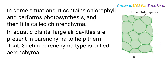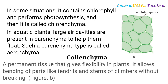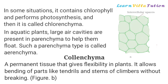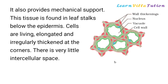In aquatic plants, large air cavities are present in parenchyma to help them float. Such a parenchyma type is called aerenchyma. Colenchyma is a permanent tissue that gives flexibility in plants. It allows bending of parts like tendrils and stems of climbers without breaking. It also provides mechanical support. This tissue is found in leaf stalks below the epidermis. Cells are living, elongated, and irregularly thickened at the corners, with very little intercellular space.